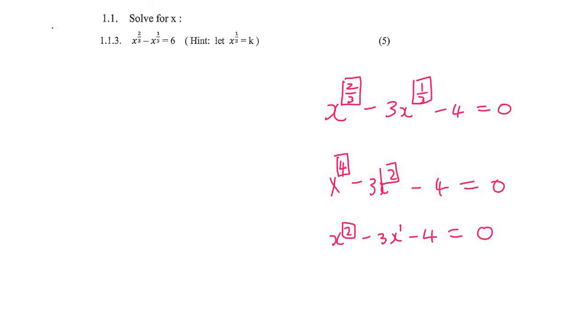So what we do here is we bring the 6 over to the other side. You should always take the smallest one, which is the 1/3, and we're going to rewrite this one using that. So we're going to say that this is (x^(1/3))^2 because those two, if you multiplied them, you're still going to get 2/3. And then we can say minus x^(1/3) minus 6 equals 0.